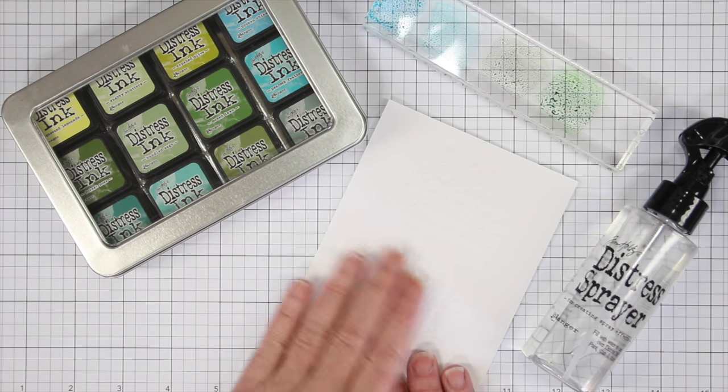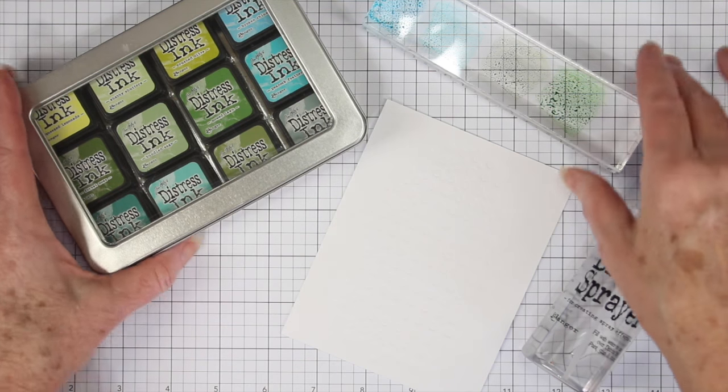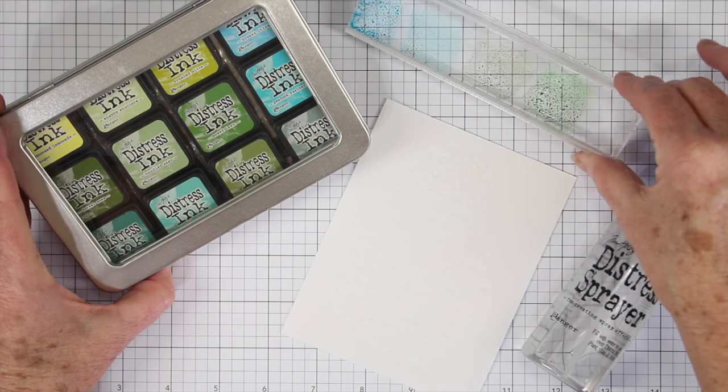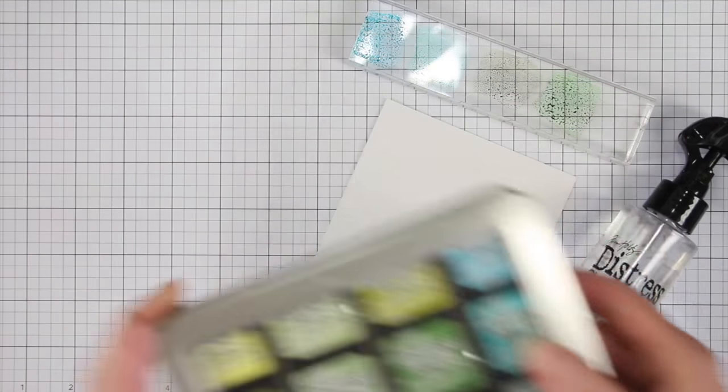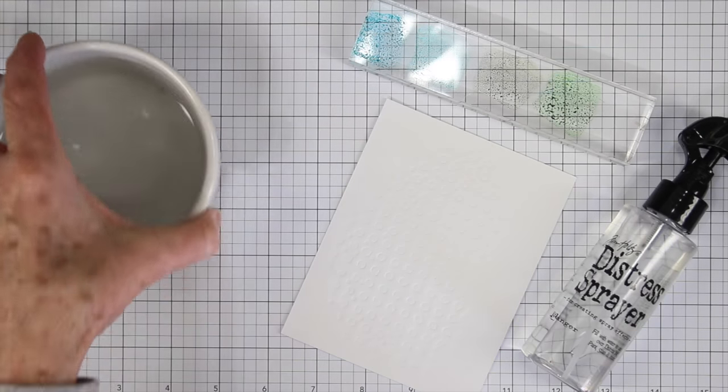I'm ready to start some watercolor. I have my cardstock here, which has been embossed or debossed, and for my watercolors, I'm using my Distress inks, and I've chosen some blues and green colors just for the background, and I have a bowl of water here.